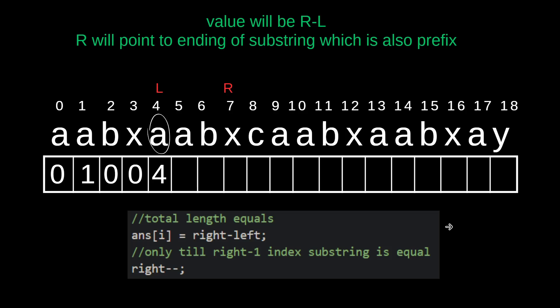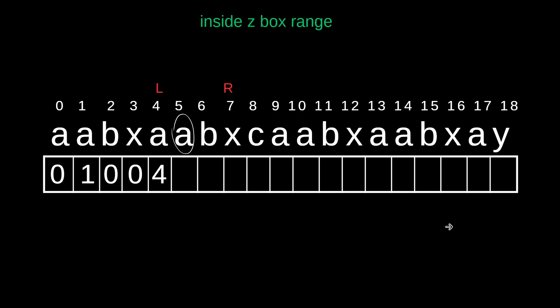The value will be R minus L, and R will point to the ending of the substring, so we decrement R. This is the code — we put it in. Now we increment our ith position. This next point is inside the boundary — inside the range of L and R — meaning we are inside the Z box. So we directly copy the value from the corresponding index. Why? Because we have already calculated it.